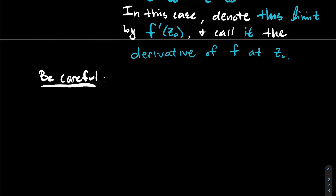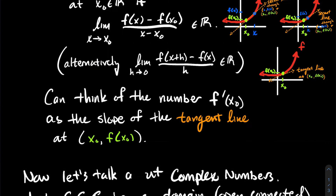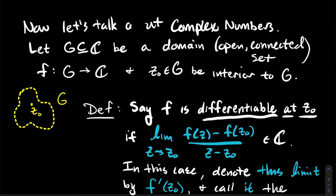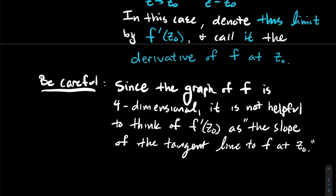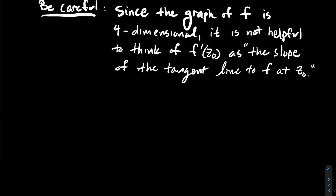Be careful here: in calculus one it was nice because I could visualize things and think of the derivative as the slope of a tangent line. Complex is a little harder, because the graph of a complex function is four-dimensional — the inputs are two-dimensional and the outputs are two-dimensional. So it's not particularly helpful to think of the derivative as the slope of some tangent line to a point; you can't really visualize what's going on in that sense.